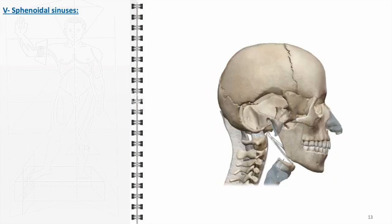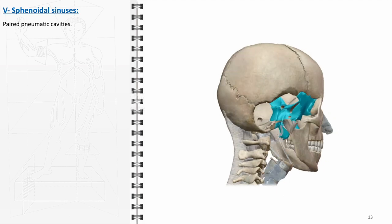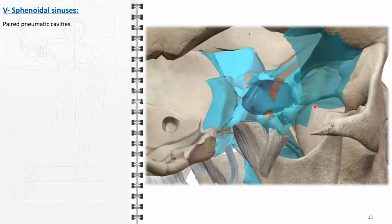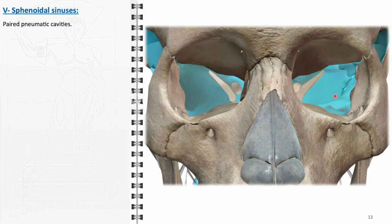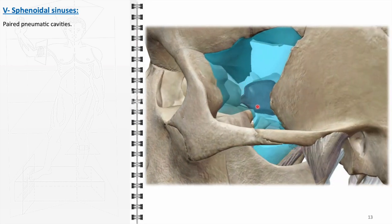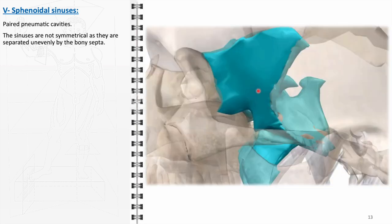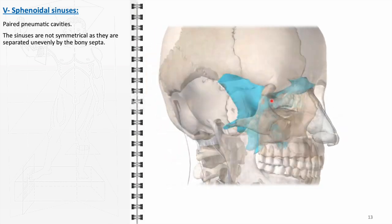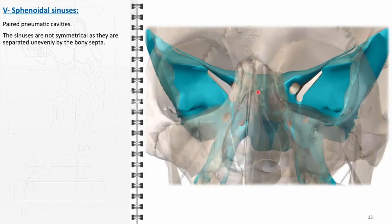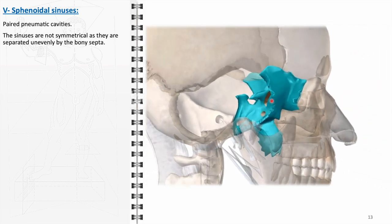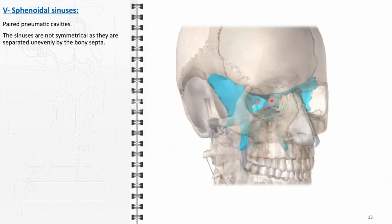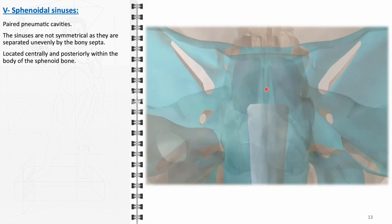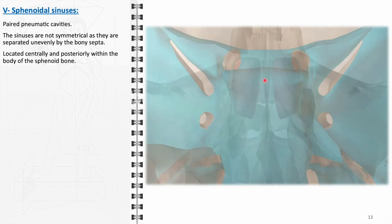The sphenoidal sinuses are an integral component of the sinus system, notable for their unique positioning and characteristics. As paired pneumatic cavities, they play a vital role in the overall function and health of the sinus system. One of their key features is their lack of symmetry, which sets them apart from other paranasal sinuses. This asymmetry is primarily due to the uneven separation by the bony septum dividing the two cavities, and can have clinical implications particularly when dealing with sinus infections or planning surgical interventions, as the asymmetry can affect drainage patterns and access.